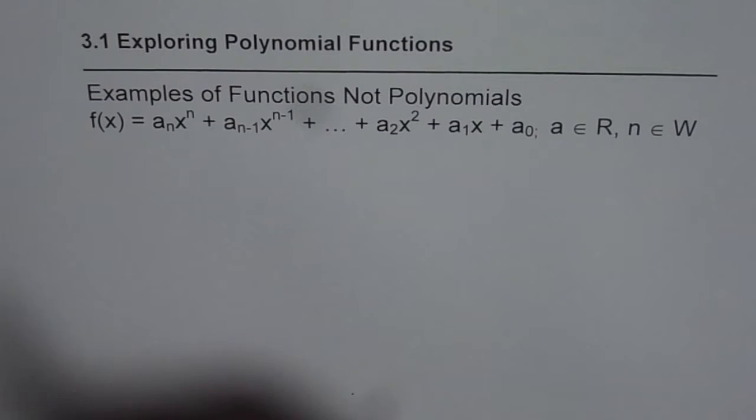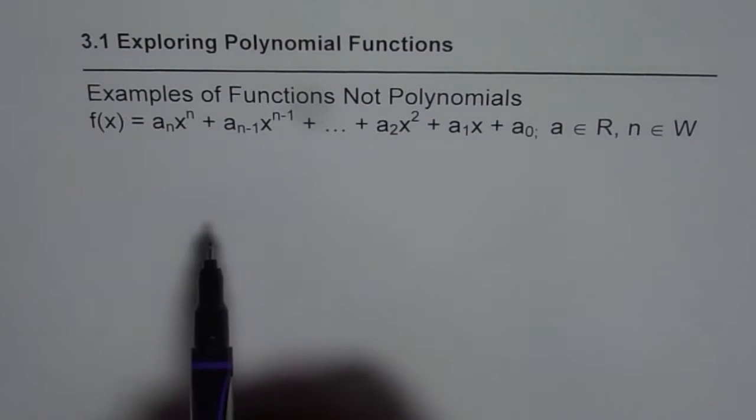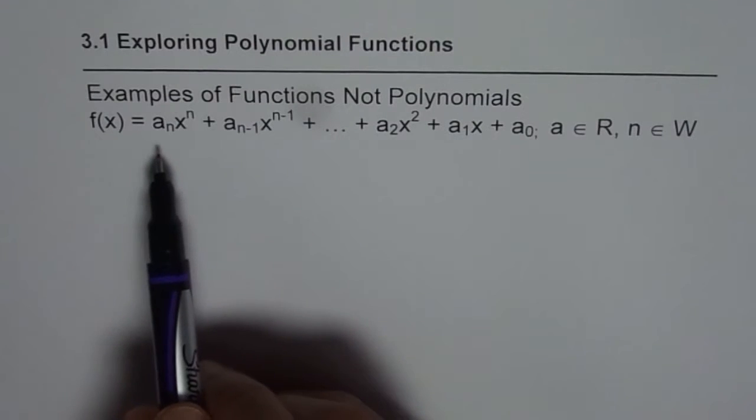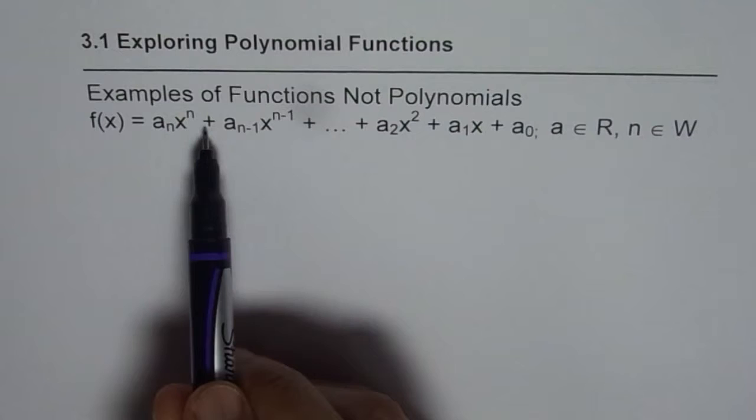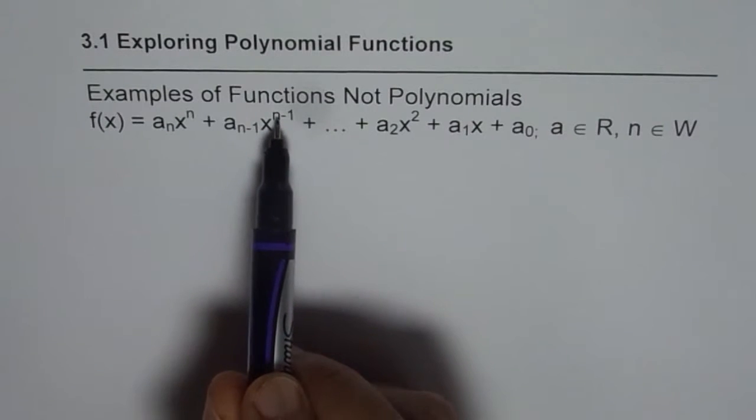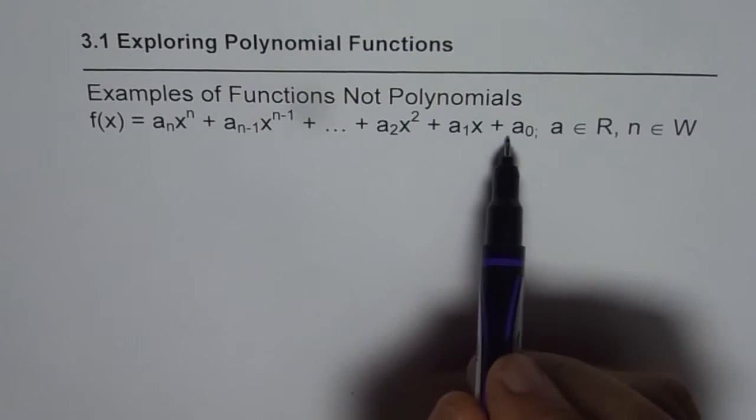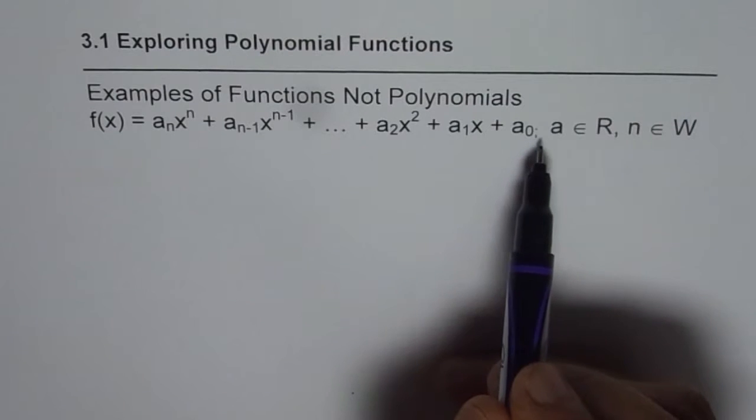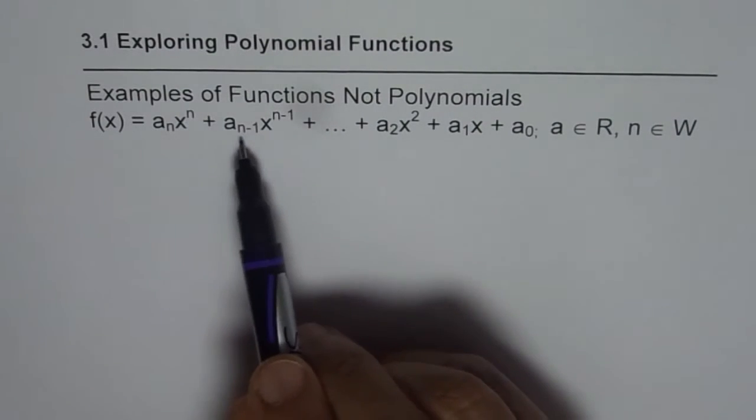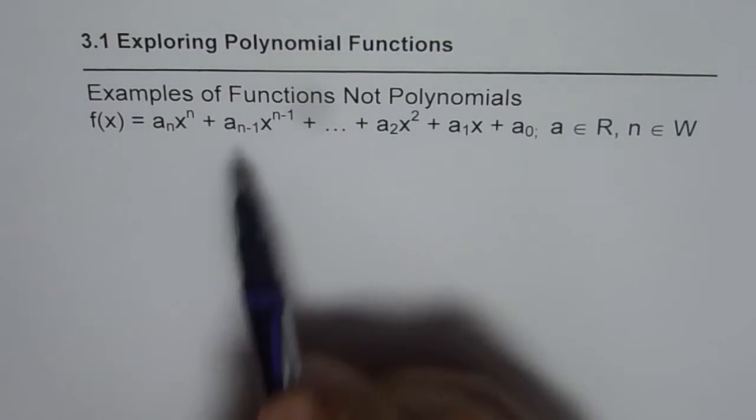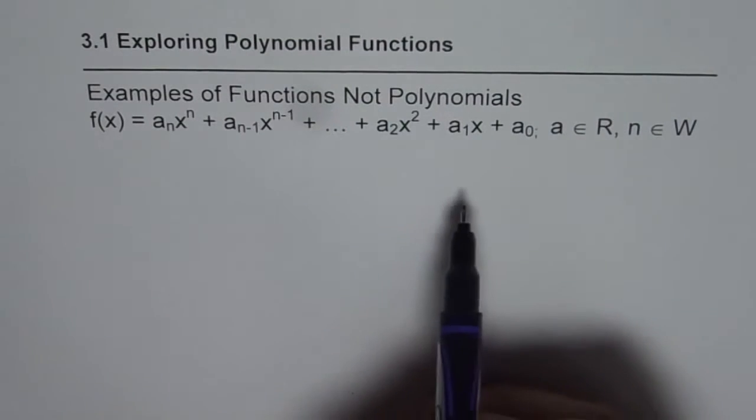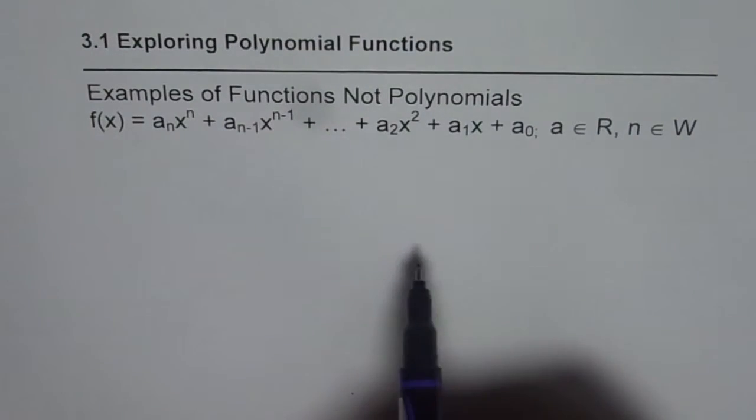As you learned in the previous video, a polynomial function in standard form is given by an expression like an x to the power of n plus an minus 1 x to the power of n minus 1 and so on till a0 where a, the coefficients of the variable x should be real numbers and these exponents should be whole numbers.